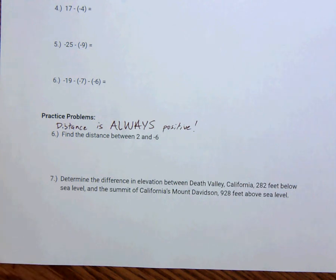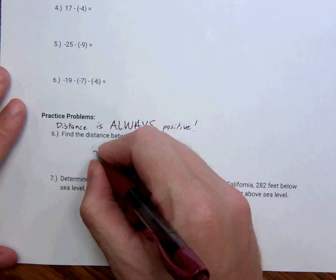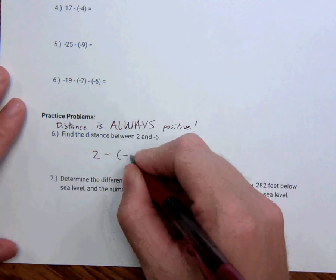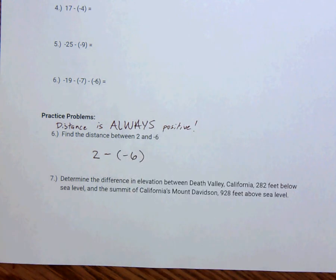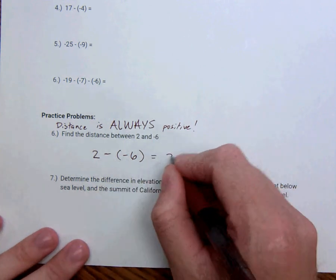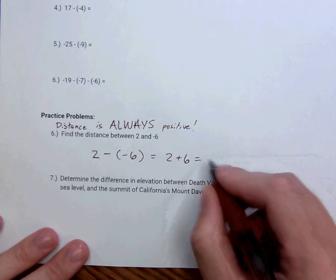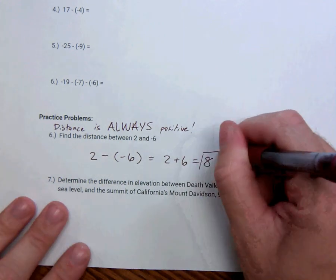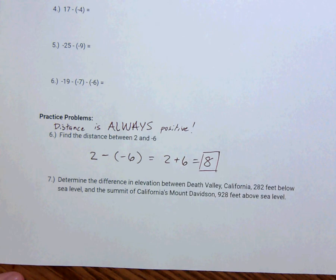So find the distance between 2 and negative 6. So when I hear the word distance between, what I should be thinking is the numbers subtract them from one another. So 2 minus a negative 6. That's what it means. The distance between means subtract them from each other. So remember, if I get the negative negative, this is the same thing as 2 plus 6, which is 8. And it's already positive. But in case it was negative 8, we'd want to take another step and make sure it's positive 8.